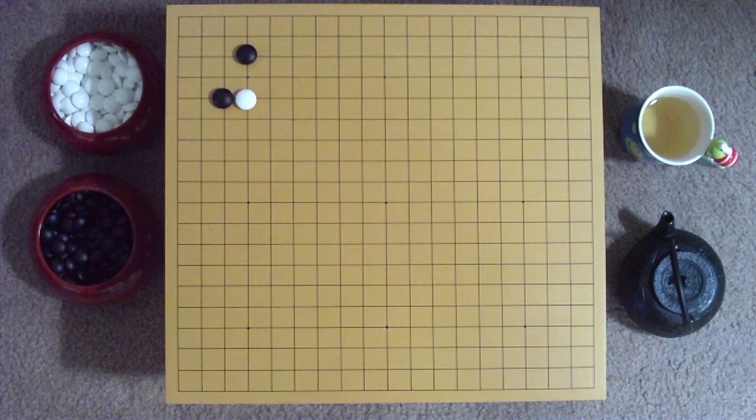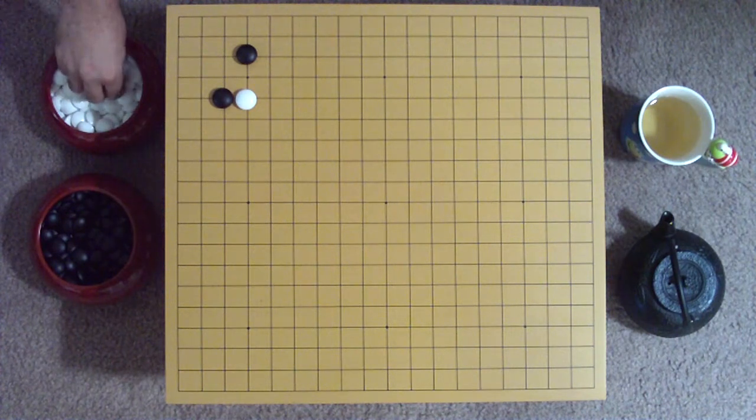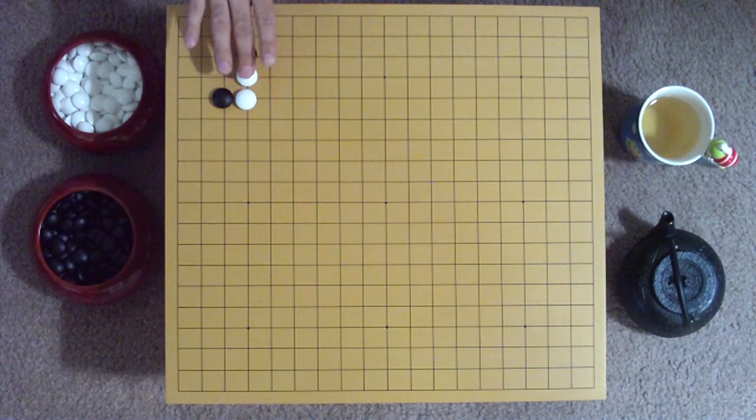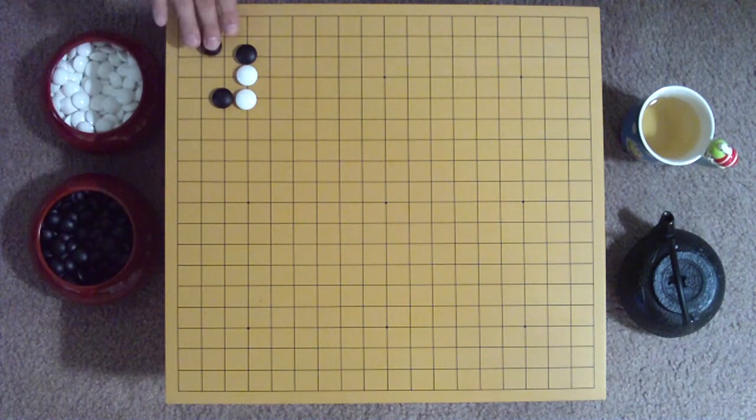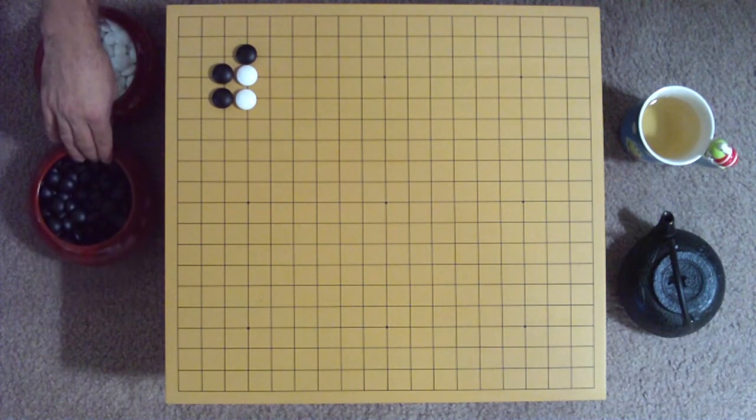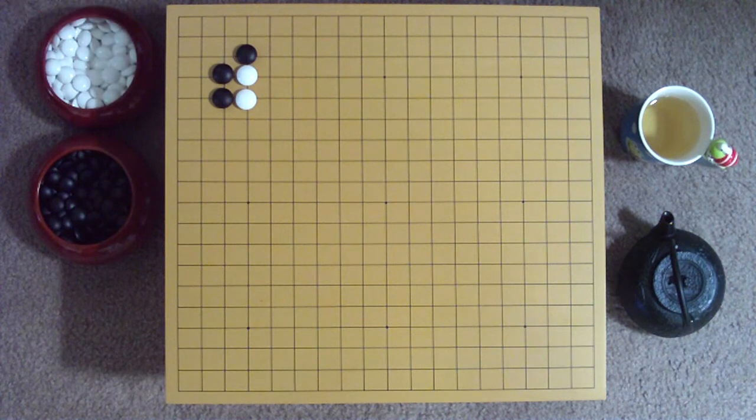This time, however, White chooses to form an iron pillar shape above Black's stones at the 4-4 point. Black mirrors White along the third line, sealing off the right side. White then bends around Black's initial stone to the third line.